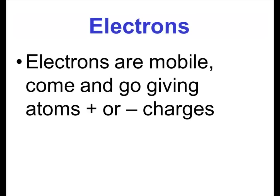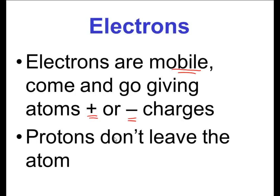In discussing charges, we first have to discuss electrons. Electrons are going to give us this charge — it's really an electron-proton relationship. Electrons are mobile, and they can come and go from the electron cloud. When they depart, they give a positive charge to the atom, or when they join an electron cloud, they give a negative charge. The protons do not leave the atom. So this is a lesson on how to calculate charges — that's where the charge is coming from.